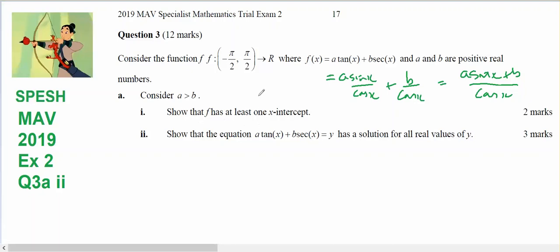Show that the function has at least one x-intercept. Well, if I turn my tan(x) into sin(x)/cos(x) and my sec(x) to 1/cos(x), I can combine those two together. I find an x-intercept when that is equal to zero.